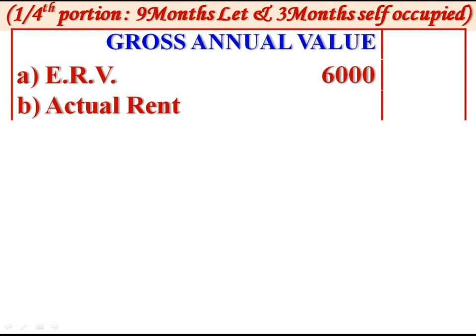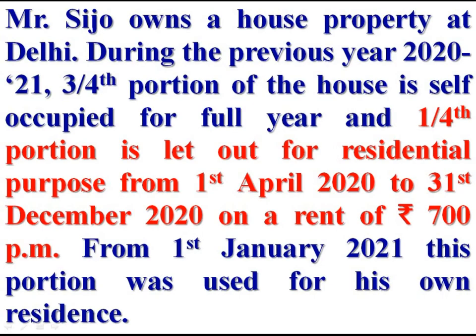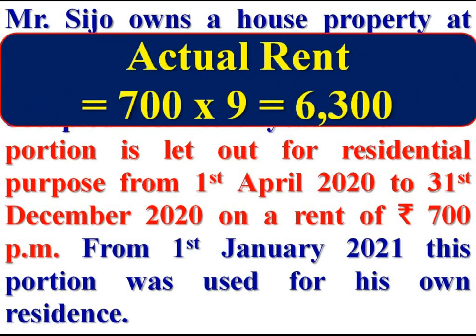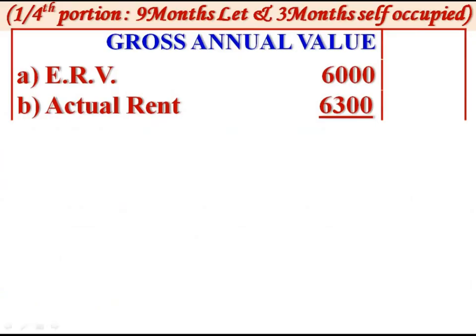Clause B: actual rent. The one-fourth portion was let out for residential purposes on a rent of Rs 700 per month. Therefore, actual rent = Rs 700 × 9 months = Rs 6,300. Clause A (expected annual value) is Rs 6,300 and Clause B (actual rent) is Rs 6,300. The higher of the two is the gross annual value: Rs 6,300.